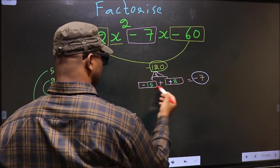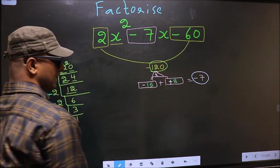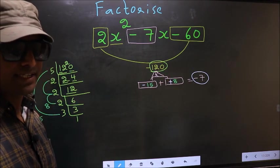-15 plus 8 is -7, -15 times 8 is -120. So we have adjusted the signs.